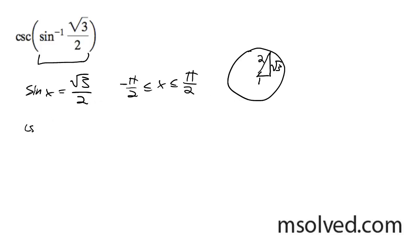So the cosecant of pi over 3, which is going to be r over y. So in this case it's going to be 2 over root 3.